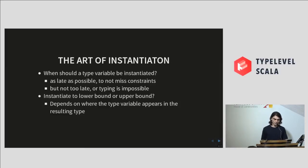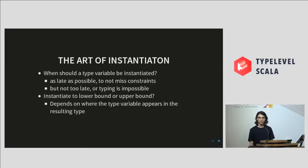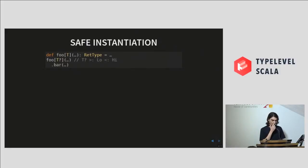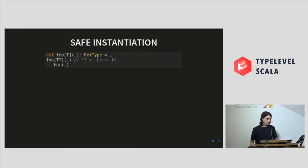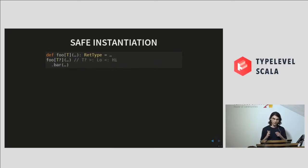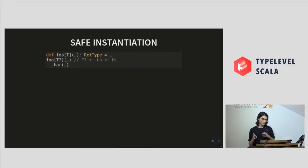The bound you pick depends on where the type variable appears in your resulting type. In some cases, instantiation is safe — and by safe I mean we can pick one solution and be sure it's not going to prevent us from type-checking the rest of our program because we picked the wrong solution.